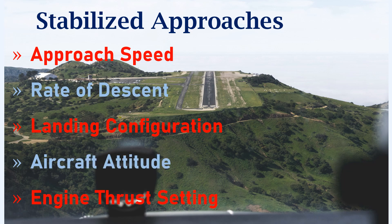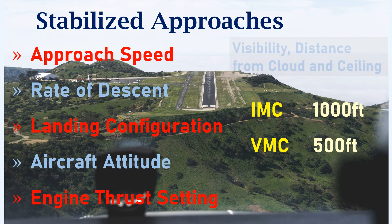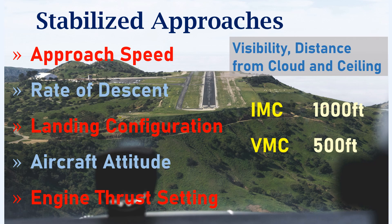Depending on whether the aircraft is flown under instrument meteorological conditions (IMC) or visual meteorological conditions (VMC), there is an altitude limitation by which the aircraft should be stabilized. Under IMC, the aircraft should be stabilized by 1000 feet, and under VMC, the aircraft should be stabilized by 500 feet. IMC and VMC are defined based on visibility, distance from cloud, and ceiling.